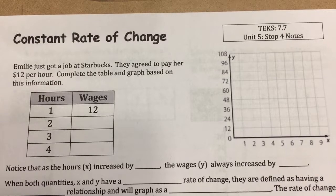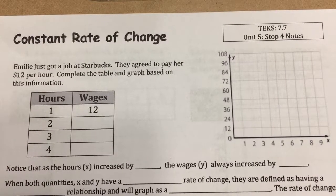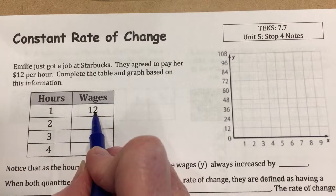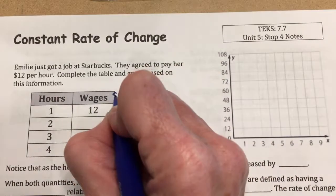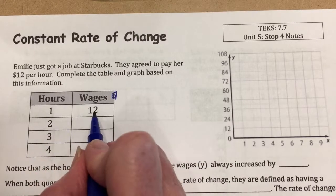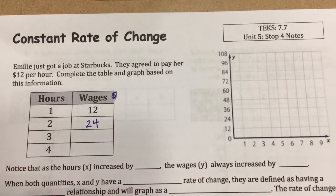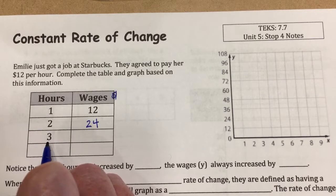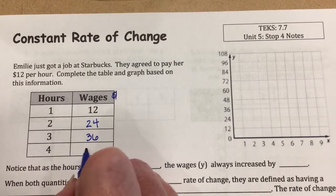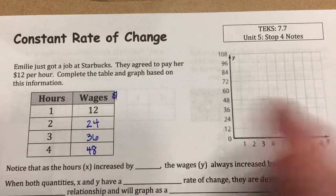In this video we're going to talk about constant rate of change. In the example, Emily just got a job at Starbucks and they agreed to pay her $12 per hour. We need to complete the table: in one hour she makes $12, in two hours 12 times 2 is $24, in three hours $36, and in four hours $48.